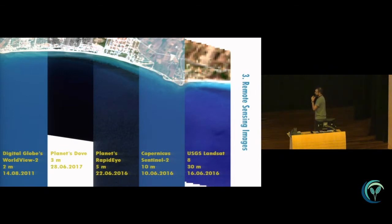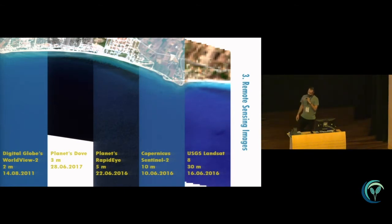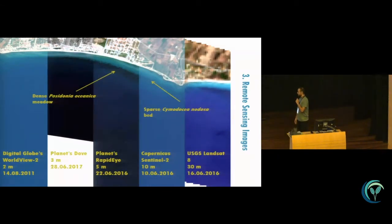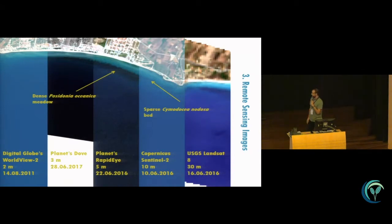These are the remote sensing images we used, ranging from 2 to 30-meter resolution from left to right. They cover the Thermaikos Gulf in the northwest Aegean. On the top you can see the two test sites on which we developed the index: a dense Posidonia oceanica meadow on the left, and a sparse Cymodocea nodosa one on the right. The first three images require a certain license, but Sentinel-2 and Landsat 8 are free and open, available as archives.